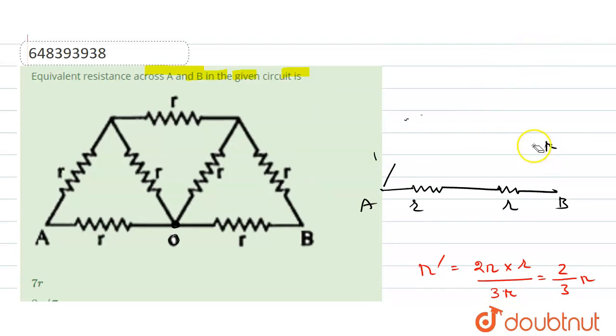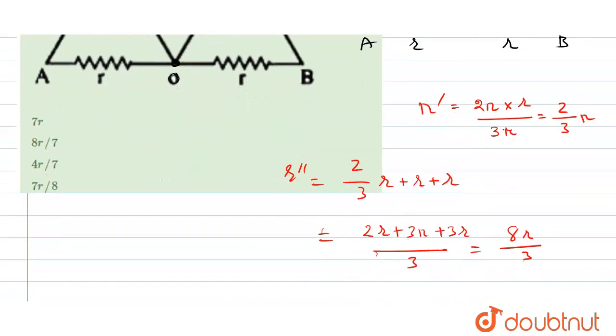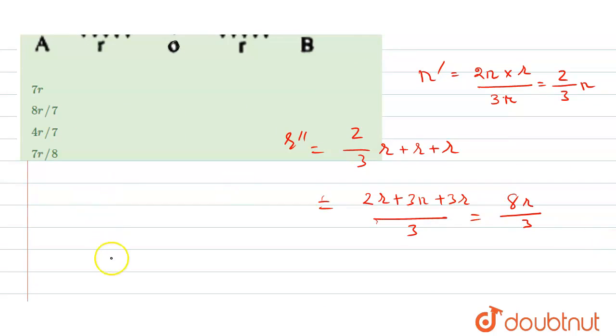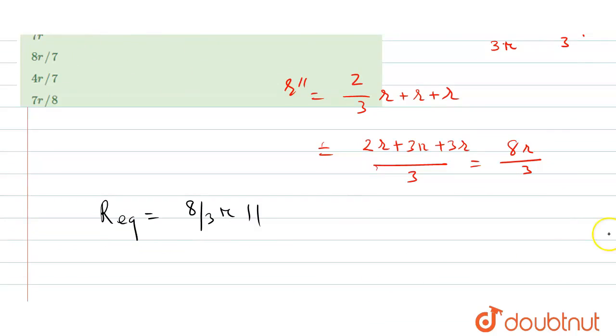So simply we have to replace one resistance, replace it by one equivalent resistance, which is 8 by 3R. Now we have to connect these two resistances, the equivalent resistance will be twice R, since they are connected in series. So this is twice R, so now these two are connected in parallel.